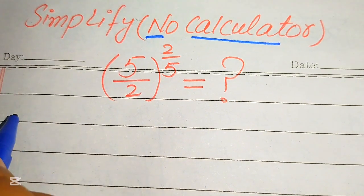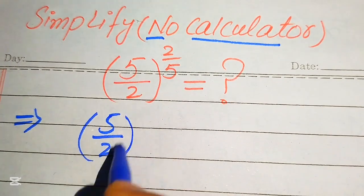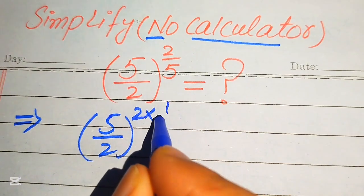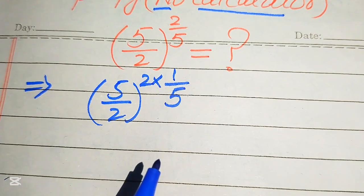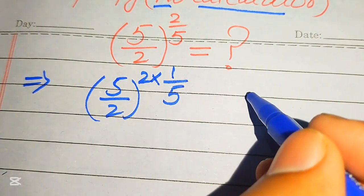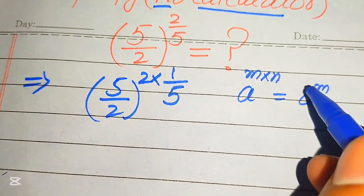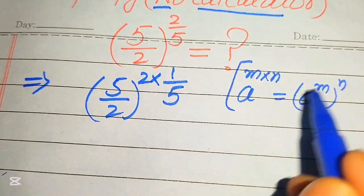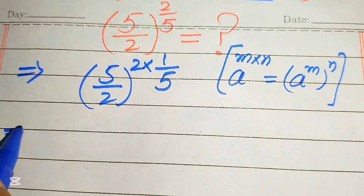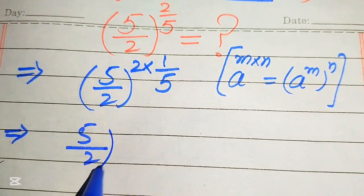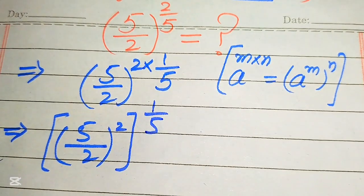First, we rewrite the exponent of this term. We have 5 over 2 to the exponent of 2 over 5. We write 2 over 5 as 2 times 1 over 5, and we apply the exponent law: if we have a to the power of m times n, we write it as a to the power of m to the power of n. So we move this 2 inside the term, giving us 5 over 2 squared, all to the power of 1 over 5.